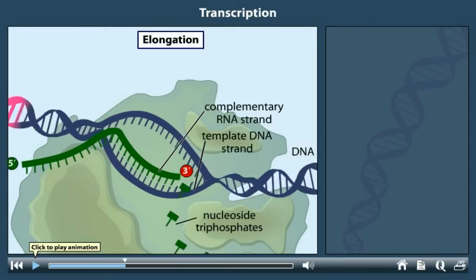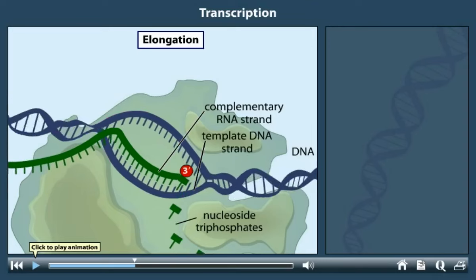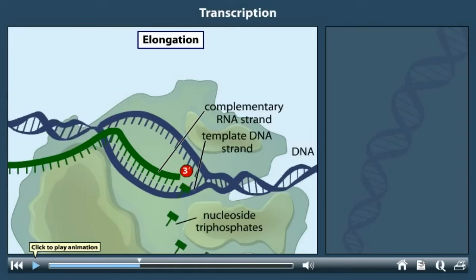The RNA strand grows by the addition of these substrate molecules to its three-prime end. This is the elongation phase of transcription.